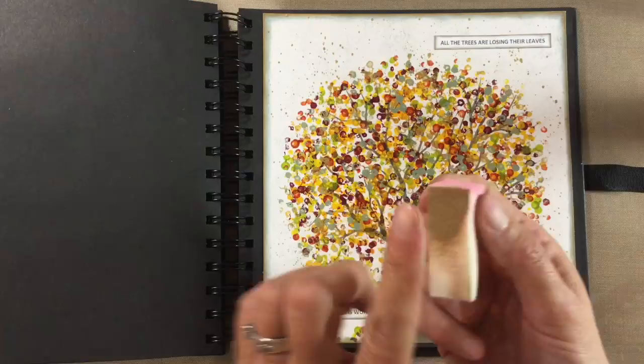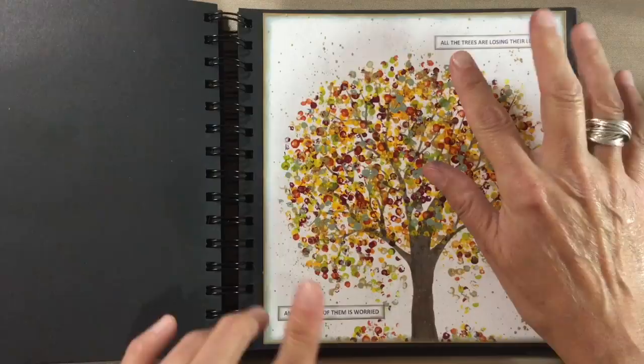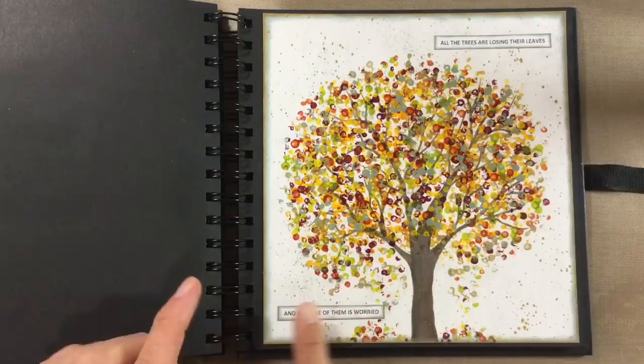I've added my quote, all the trees are losing their leaves and not one of them is worried, which I just thought went really well with the page. And I've just edged that in the two colours of Distress Oxide, so iced spruce and then walnut stain on top. And that's it.